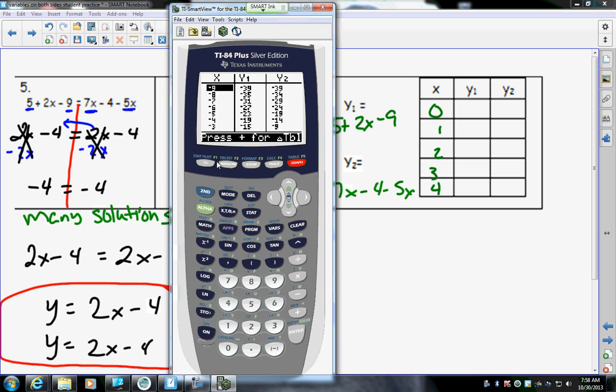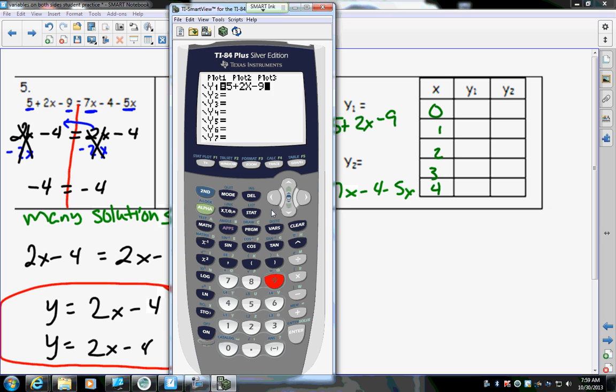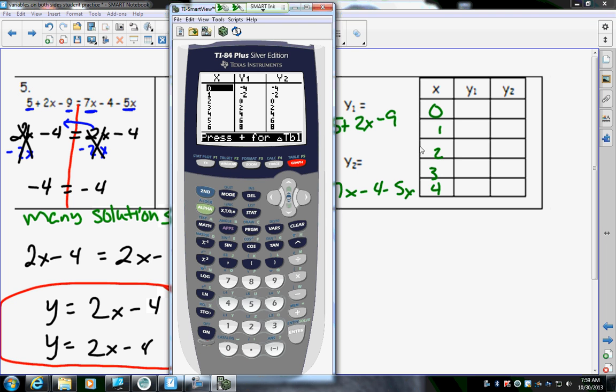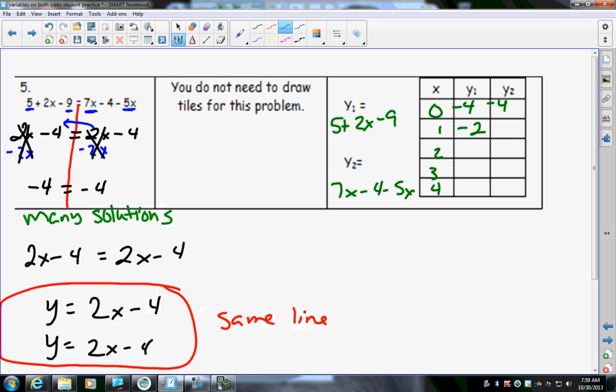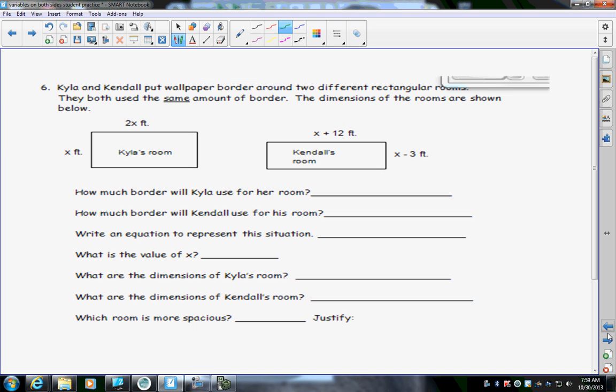So, let's see here. I'm going to go into the calculator. And I have 5 plus 2x minus 9, 7x minus 4 minus 5x. second graph. Oh, I want to go to the 0. Not that I have to. It's just that's what I wrote down. Look how all of y1, the whole column is the same. When that happens, there's many solutions. So, let me fill this in. Because there's not, you know, we were circling the row where y1 and y2 are the same. There isn't just one row where that's true. All of them are true.